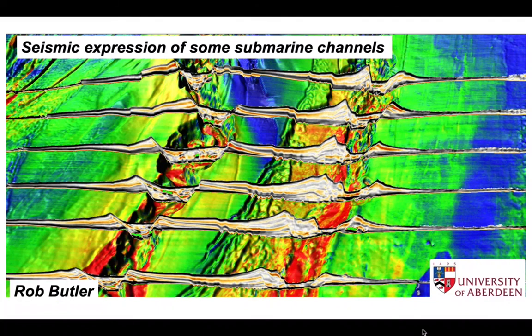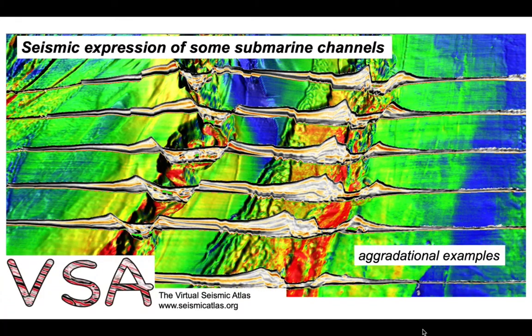The principal way in which siliciclastic sediment reaches the deep oceans is through turbidity currents, and these are very commonly routed along channels which can make some pretty spectacular depositional architectures imaged on seismic profiles. In this short presentation we'll be looking at examples of aggregational channels - ones built up through the accumulation of sediment left behind by turbidity currents. All the examples come from the Virtual Seismic Atlas.